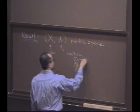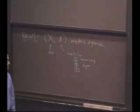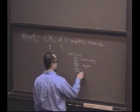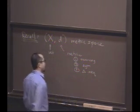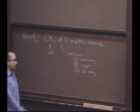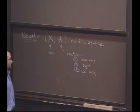Good. Non-negativity, symmetry - distance between P and Q is the same as the distance from Q to P - and the triangle inequality. And that is often the most interesting one to check if you want to verify that something is a metric.